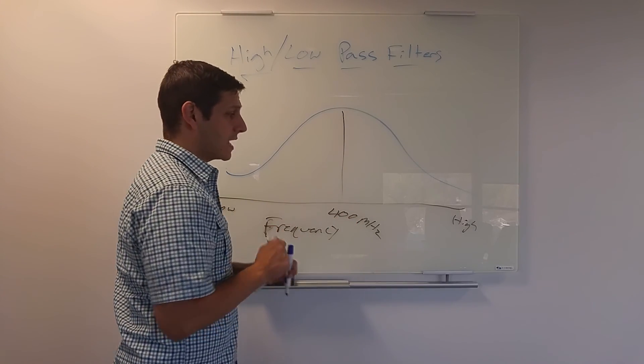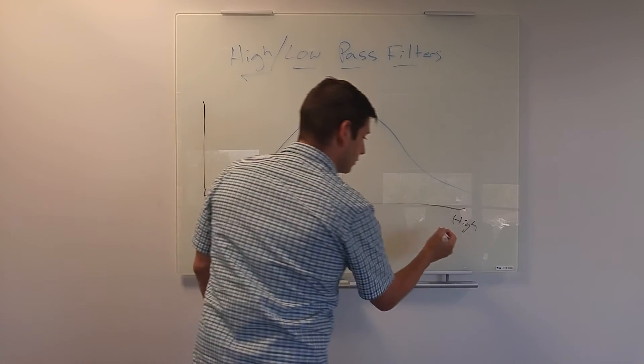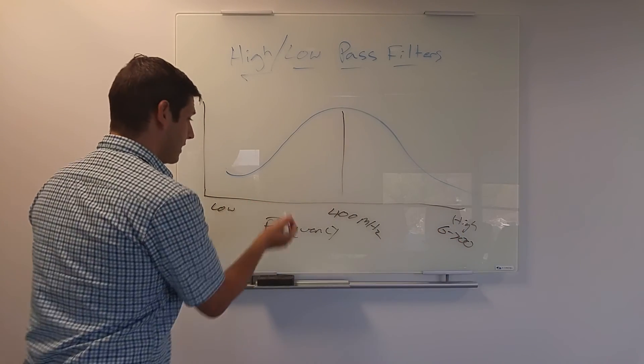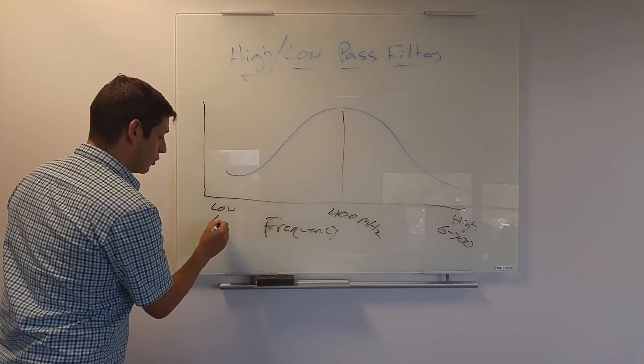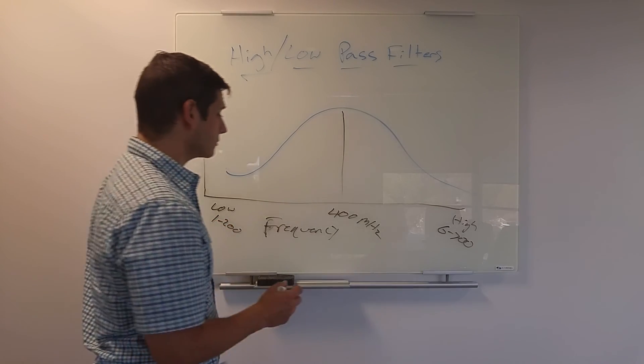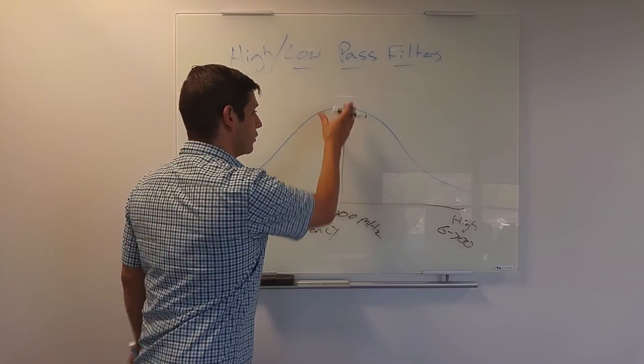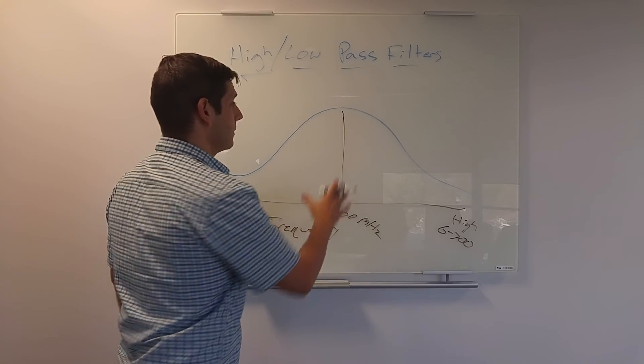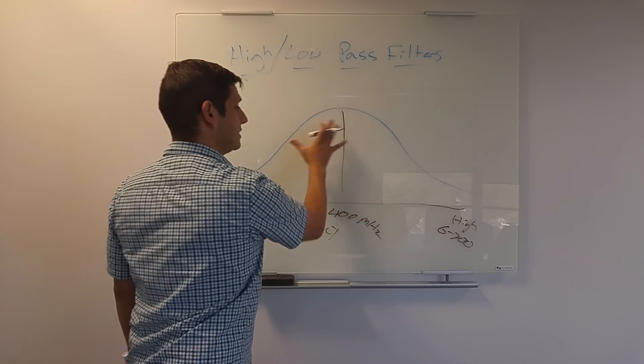But a 400 megahertz antenna may range up to, I don't know, 600 to 700. And maybe as low as 1 to 200 megahertz. So the 400 is the center frequency and kind of plus minus a few is this bell curve, right? That's this distribution here.